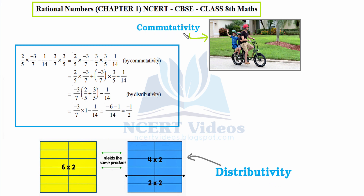The word commutative comes from the English word meaning moving from one place to another. You can see children commuting from one place to another. Likewise in mathematics, when we solve rational numbers, there are times when we have to move a rational number from one place to another in order to ease our calculation.